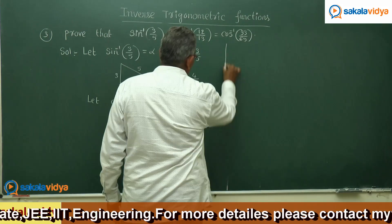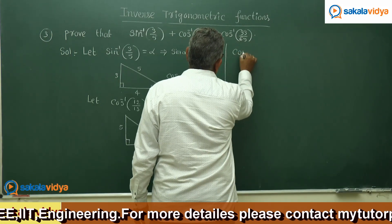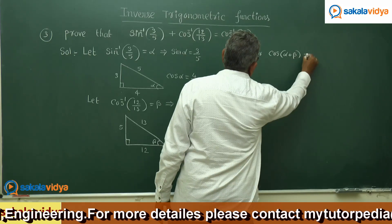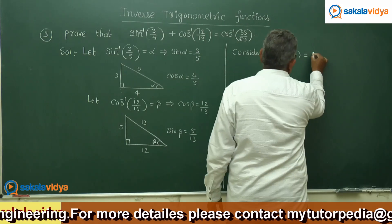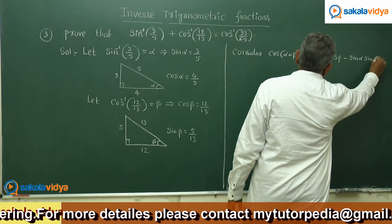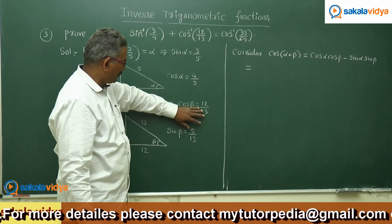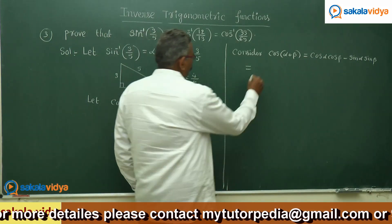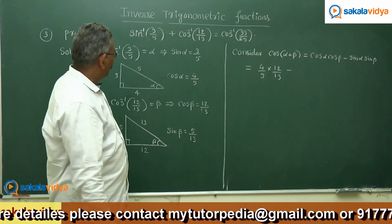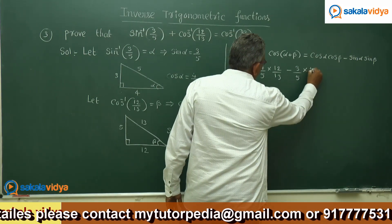Now we have to restate the problem. Consider cos of alpha plus beta. Cos of alpha plus beta equals cos alpha cos beta minus sin alpha sin beta. Substituting the respective values: cos alpha is 4 by 5, cos beta is 12 by 13, so 4 by 5 multiplied by 12 by 13, minus sin alpha sin beta — sin alpha is 3 by 5, sin beta is 5 by 13 — so minus 3 by 5 multiplied by 5 by 13.